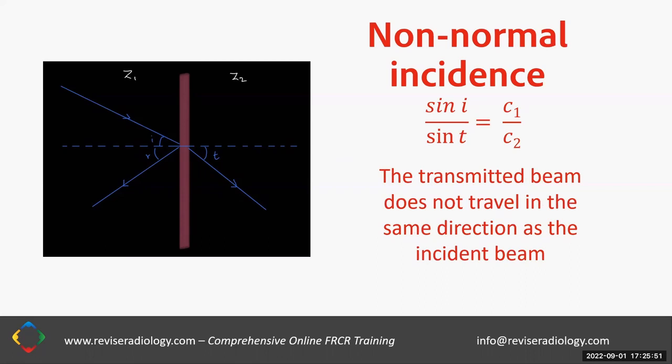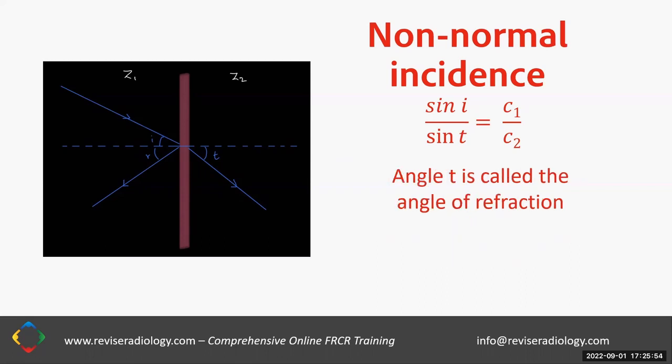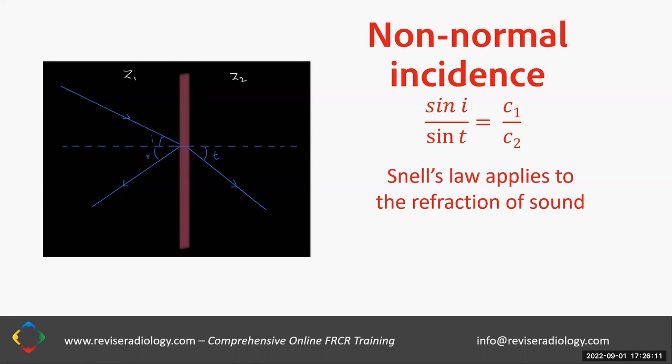The transmitted beam doesn't travel in the same direction as the incident beam. The angle T is called the angle of refraction, and the relationship between angles I and T is: sine I divided by sine T equals C1 divided by C2, where C1 is the speed of sound in medium Z1 and C2 is the speed of sound in medium Z2. Snell's law applies to the reflection and refraction of sound.